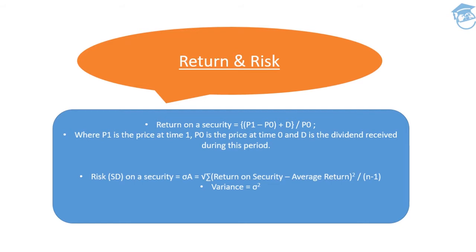Return on a security equals P1 minus P0, add dividend D, divide the whole by P0. Where P1 is the price at time one, P0 is the price at time zero, and D is the dividend received during this period.